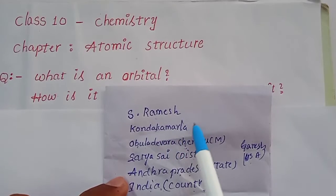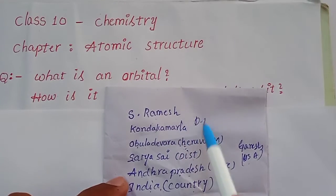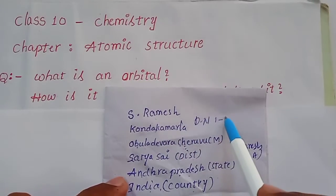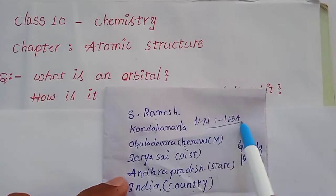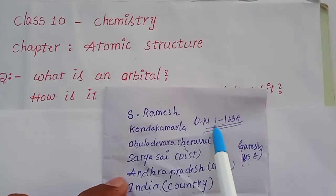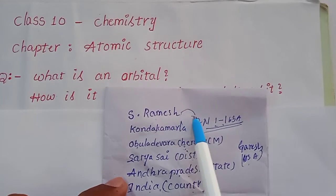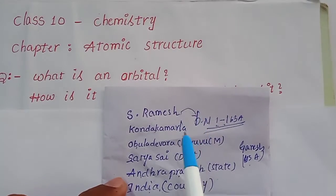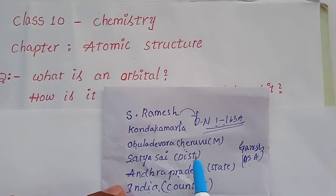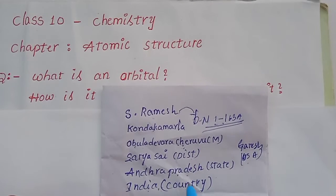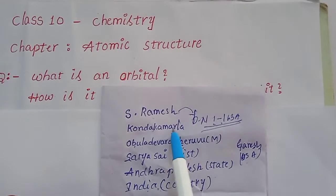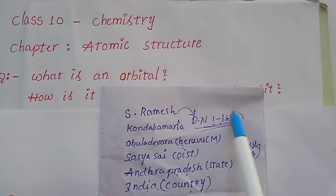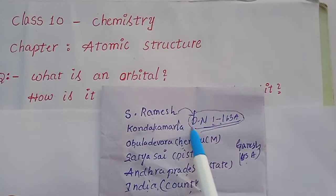For example, the door number is C1-163A. This is used to illustrate how we locate a specific place within an address.